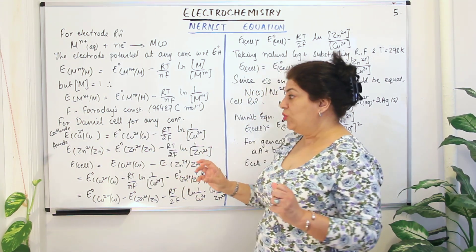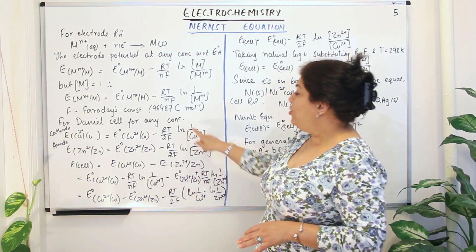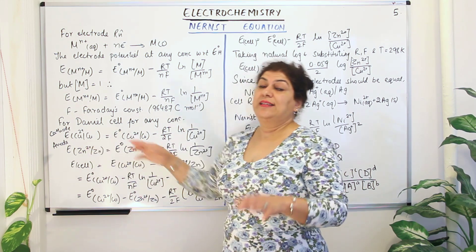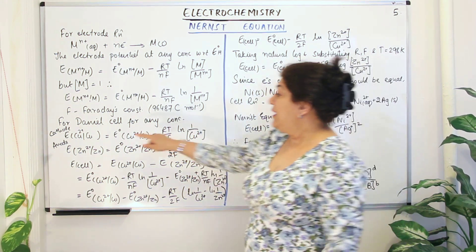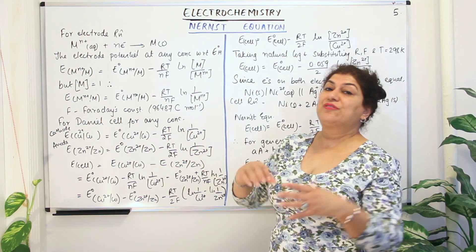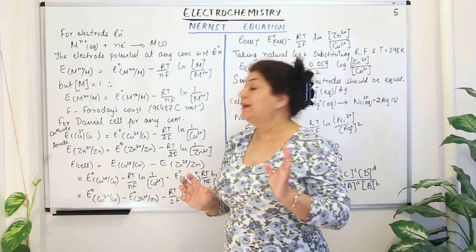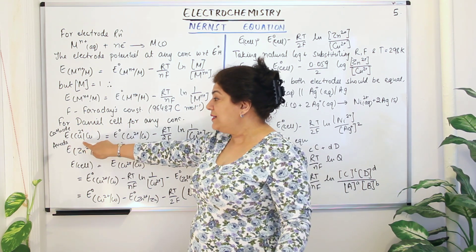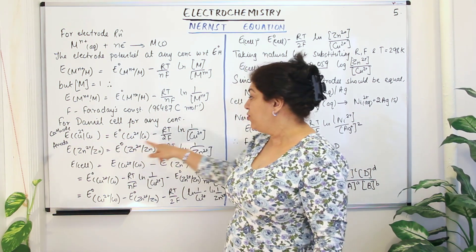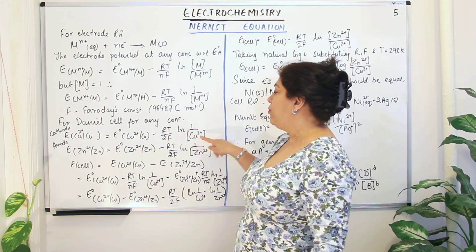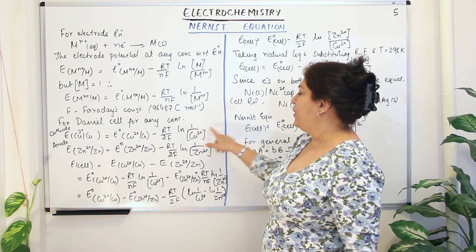For Daniel's cell, we have the copper cathode and the zinc anode. Let us apply this correction and calculate using the Nernst equation. The potential difference of a cell is E cell = E right minus E left. The electrode potential for the copper cathode would be equal to the standard electrode potential of copper cathode minus RT upon 2F ln(1/[Cu²⁺]), because the ion here is Cu²⁺ and the concentration of copper solid on top is 1.